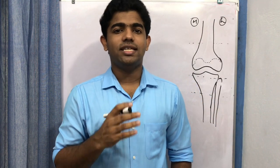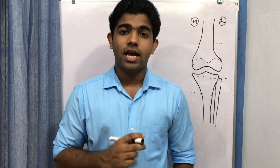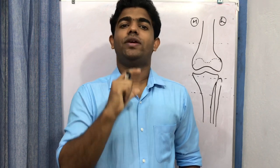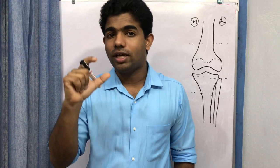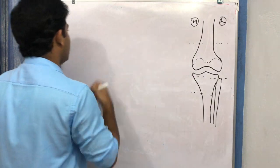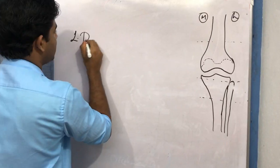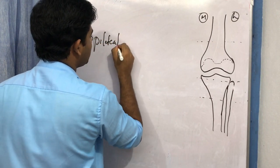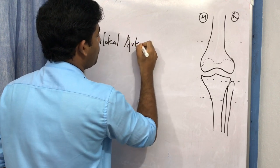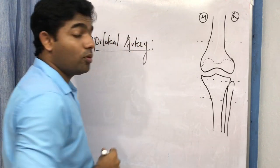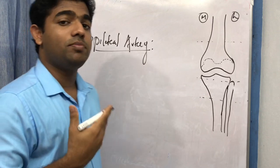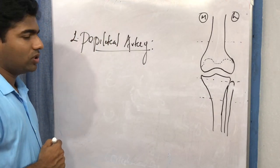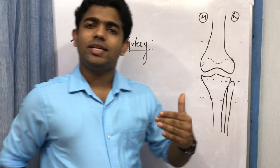We completed the discussion on the tibial nerve and common peroneal nerve. Now we focus on the popliteal artery, which is more important with regard to studies than the tibial nerve.